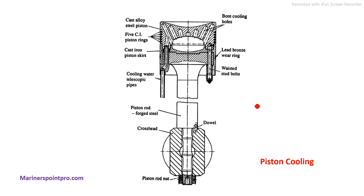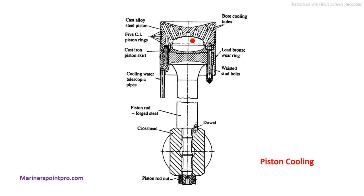Next is piston cooling. This is basically a diagram of a water-cooled piston. In a water-cooled piston we have telescopic pipes to transfer water to the piston crown. The water reaches up to the piston crown through these telescopic pipes, and with the help of bore holes the cooling happens at the piston crown surface area. Then the water returns back again.